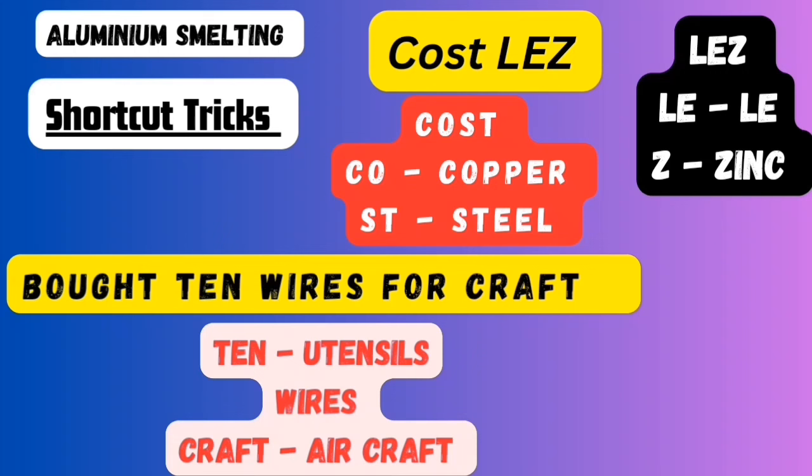The fourth point: when she went to LSM mall, she bought 10 wires for graft. Here, 10 refers to utensils, wires refers to wires, and graft refers to aircraft. So aluminium is used to manufacture utensils, wires, and aircraft.